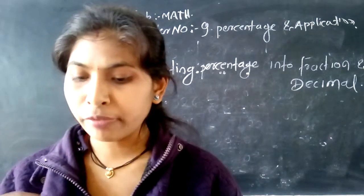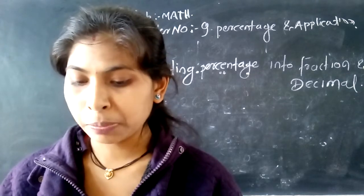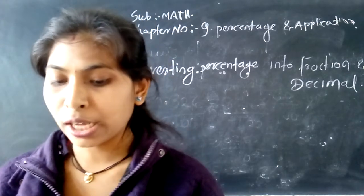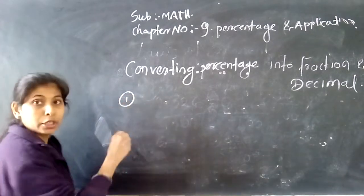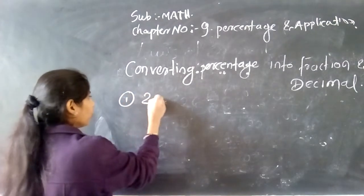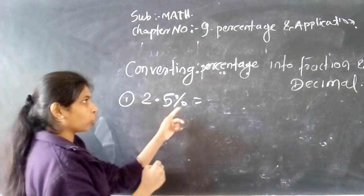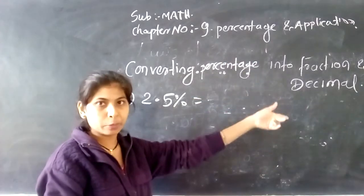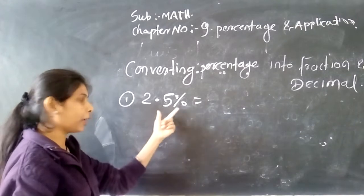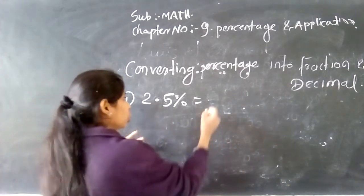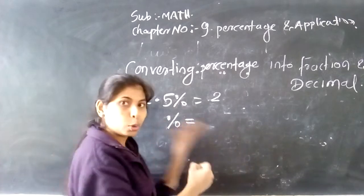हमें एक percentage की value दी होई होगी, उसको हमें fraction और decimal में convert करना है। पहला example है 2.5% — उसको यहाँ पे percentage को हमें fraction और decimal में convert करना है। यहाँ पे 2.5% दिया हुआ है, तो हम % का जो sign है, इसको क्या बोलते हैं?